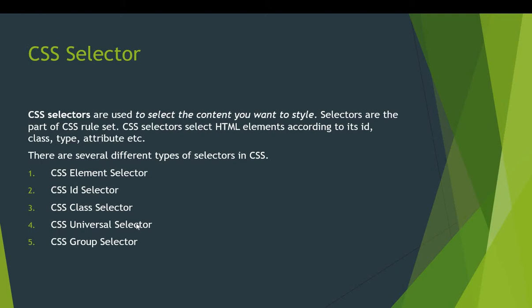The ID selector selects the ID attribute of the HTML element to select a specific element. The class selector is used to select all the elements with a specific class attribute. The universal selector is used as a wildcard character — it selects all the elements on the page. And last is the group selector, which is used to select all the elements with the same style definition.